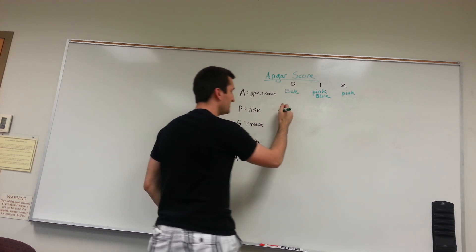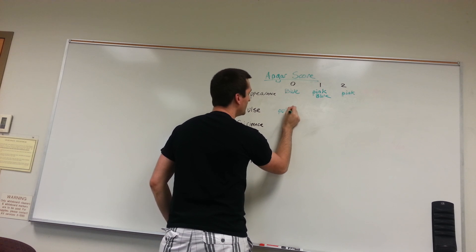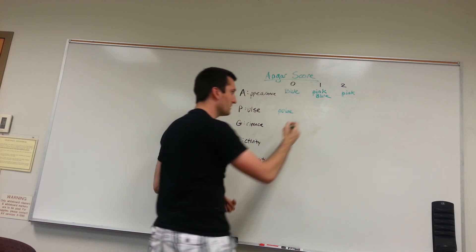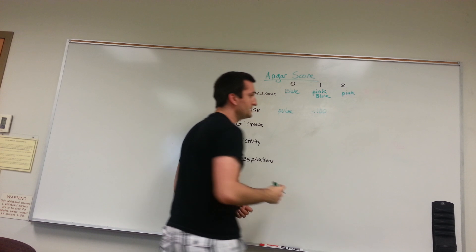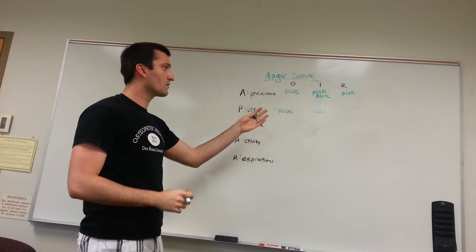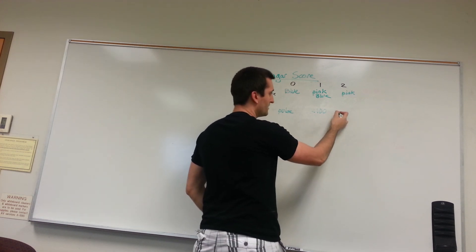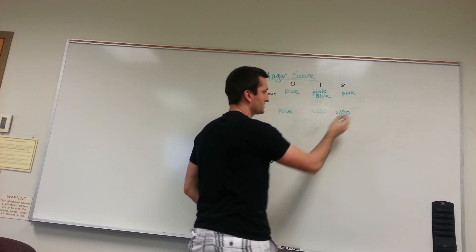Pulse. Pulse is going to be pulseless. If they do not have a pulse, they give them a score of 0. If their pulse is less than 100 beats per minute, then you'll give them a score of 1. And if it's greater than 100, then you'll give them a score of 2.